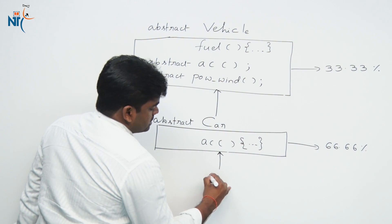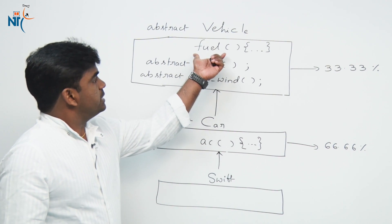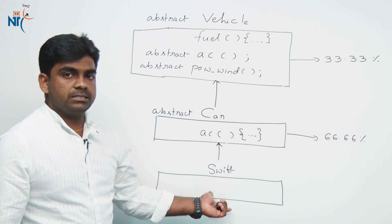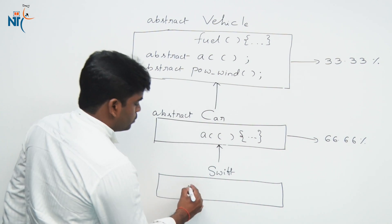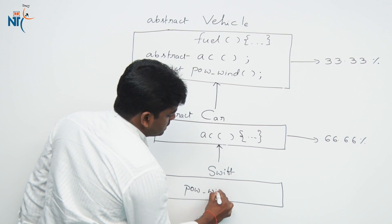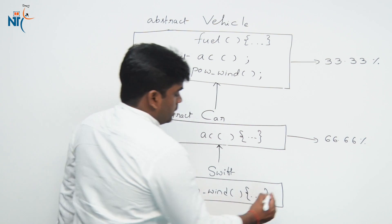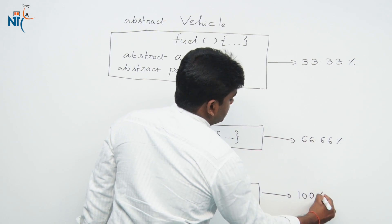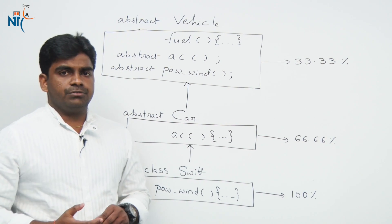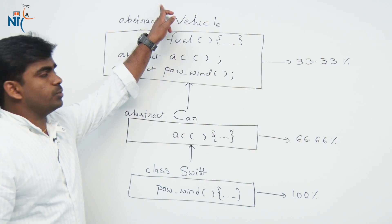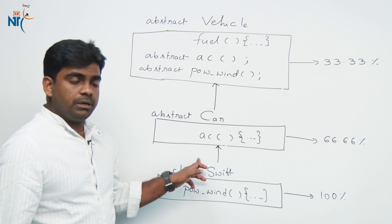There is one more extension. For example, we take Swift. In this case, Swift collects 33 percent from its grandparent through multi-level inheritance, 33 percent from its parent Car, and it provides the definition for power windows — yes, it is providing. So this is 100 percent defined. This we can define as a concrete class.